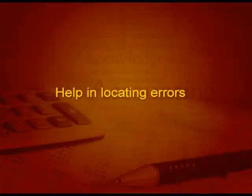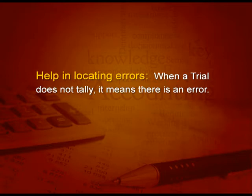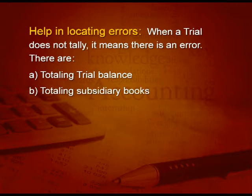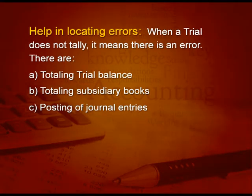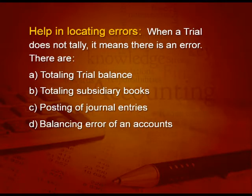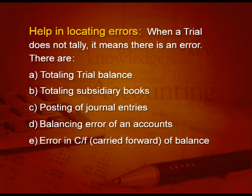On the second point — help in locating errors — when a trial balance does not tally, it means there is an error. The kinds of errors can be: first, an error in totaling the trial balance; second, an error in totaling the subsidiary books such as purchase return, purchase book, sale return, sale book; and third, an error in posting of journal entries. There can also be an error in balancing an account, or in carrying forward the balance to the trial balance.